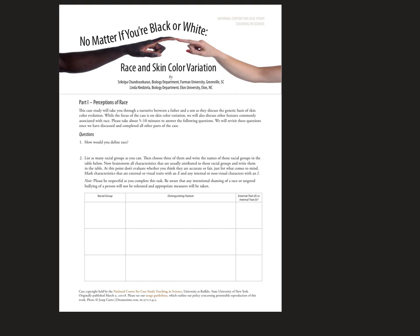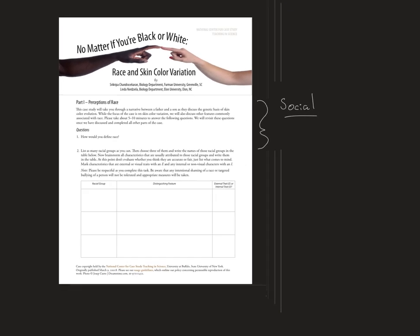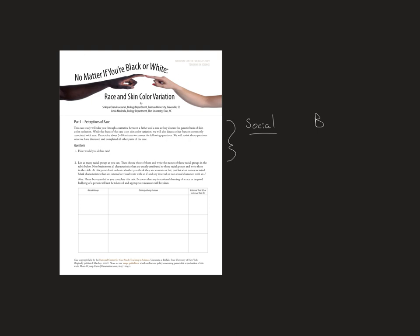This particular case study is about color variation in humans. You'll note that they ask how would you define race. Race is only a word used as a social construct. In society, race is something that actually exists, but biologically, race is not something that's considered valid.